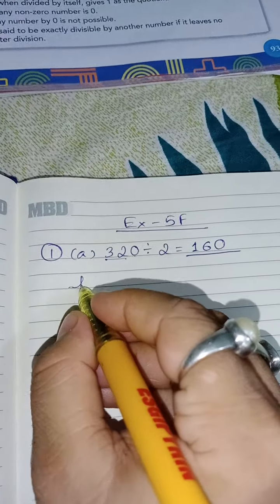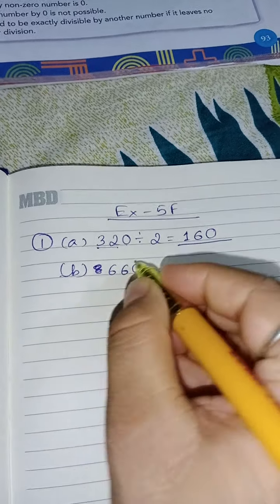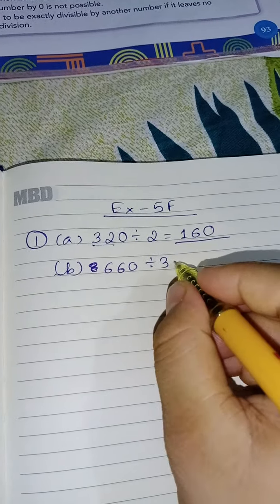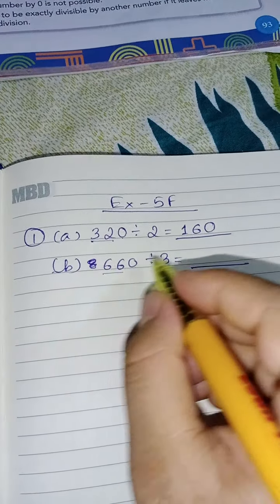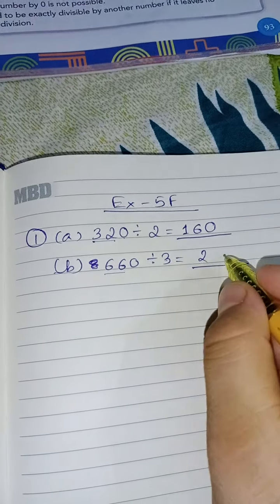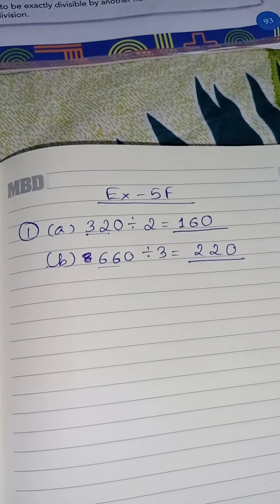Number B, 660 divided by 3. So you just divide 66 by 3. So 3 to the 6, 3 to the 6. One 0 is there, so put this 0. So answer is done.